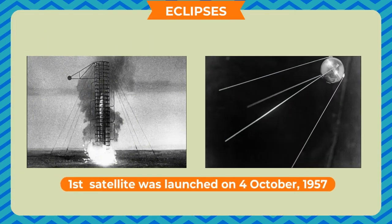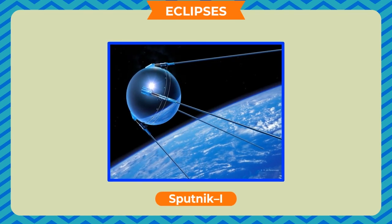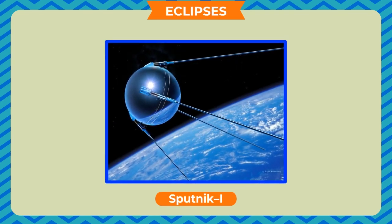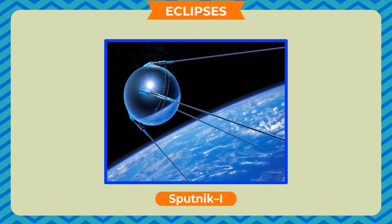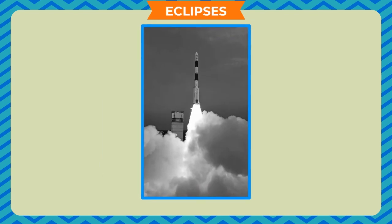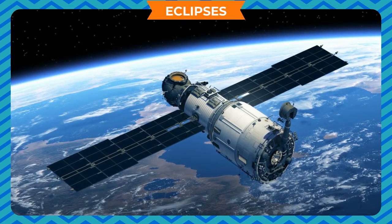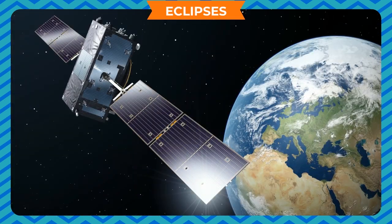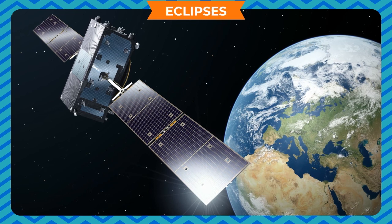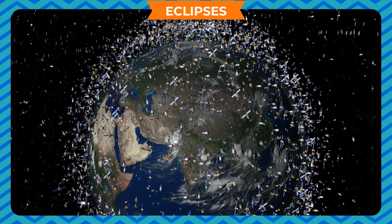Artificial satellites are sent into space through rockets. The world's first artificial satellite was launched on 4th October 1957 and was named Sputnik 1. It kept moving for about 6 months, and since then many more satellites have been sent into space.